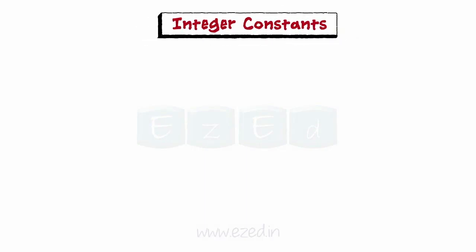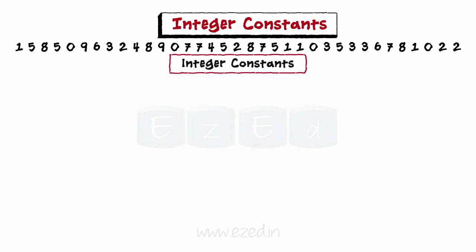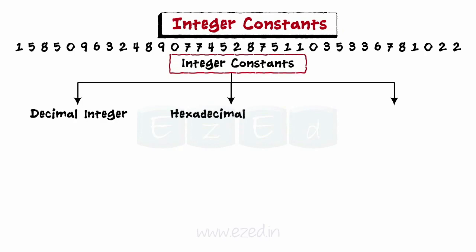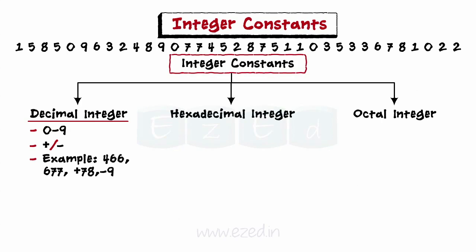Moving on to integer constants. They are sequence of digits. There are three types of integer constants: Decimal integer, hexadecimal and octal integer. Decimal integer consists of digits 0 to 9 with an optional plus or minus sign. Examples are 466, 677, plus 78, minus 90.